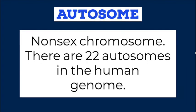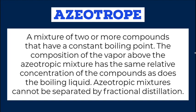Autosome: A non-sex chromosome. There are 22 autosomes in the human genome. Azeotrope: A mixture of two or more compounds that have a constant boiling point. The composition of the vapor above the azeotropic mixture has the same relative concentration of the compounds as does the boiling liquid.